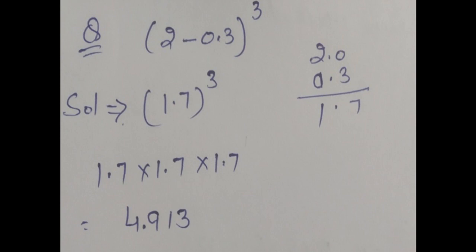Your first question is 2 minus 0.3, whole cube. First of all, we will subtract these two numbers. We will get 1.7. Then simply find the cube of 1.7 — it means we will write 1.7 three times and then multiply it. You will get 4,913.